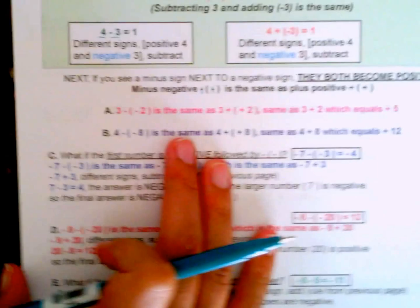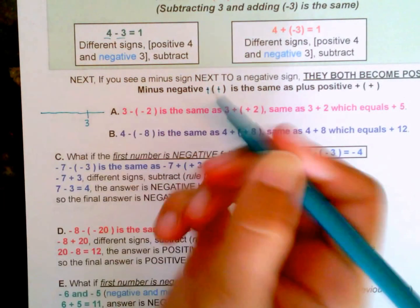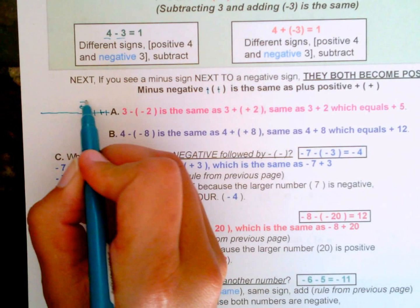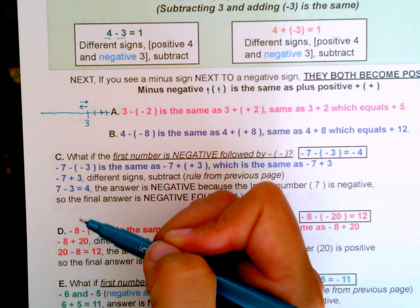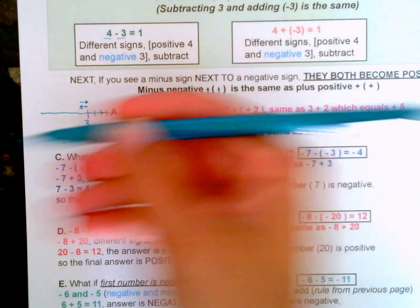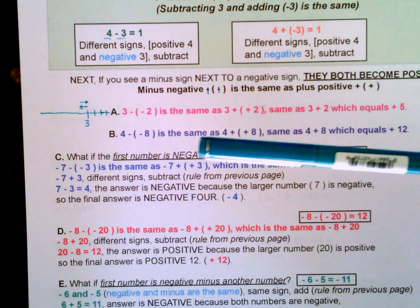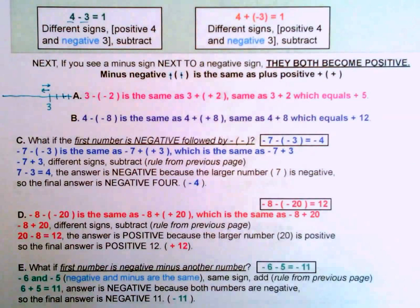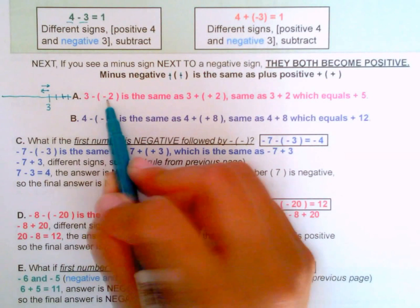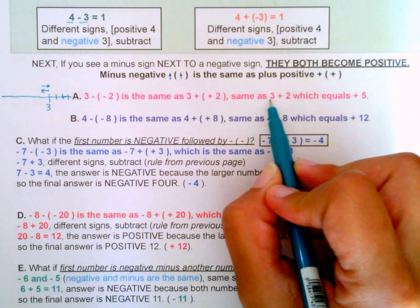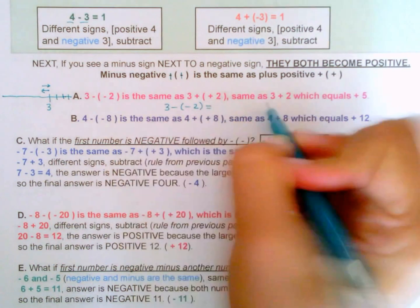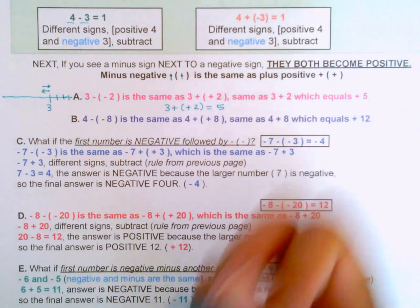For example A: three minus negative two is the same as three plus positive two. Think about it on the number line — if we're at three and it says minus, we go left, but if there's another minus, that's the opposite direction, taking us back into the positive direction. These two minuses negate each other and become positive. So three minus negative two equals positive five.